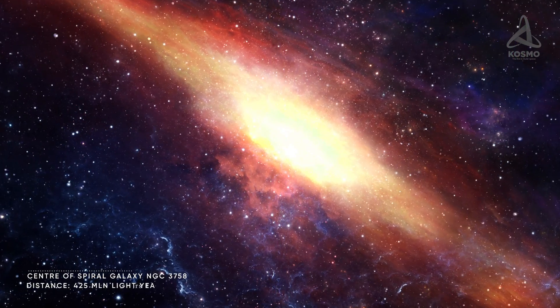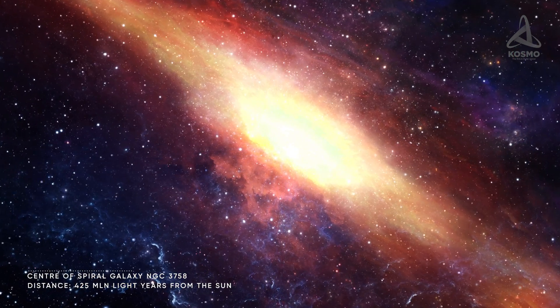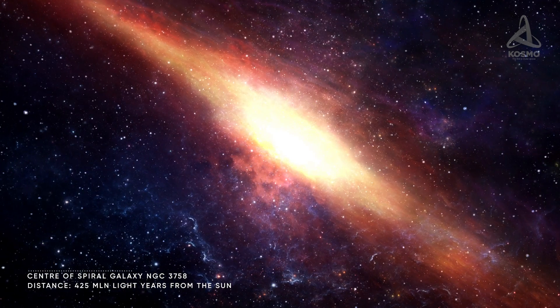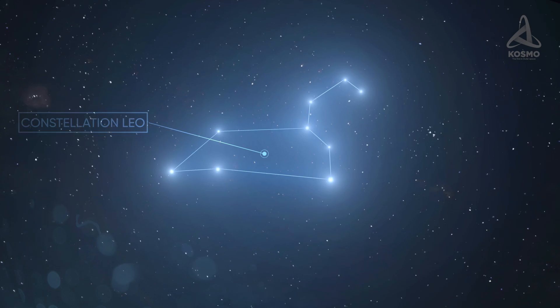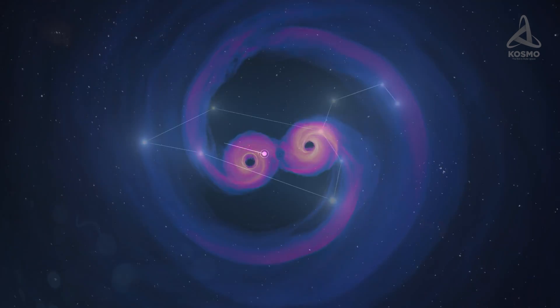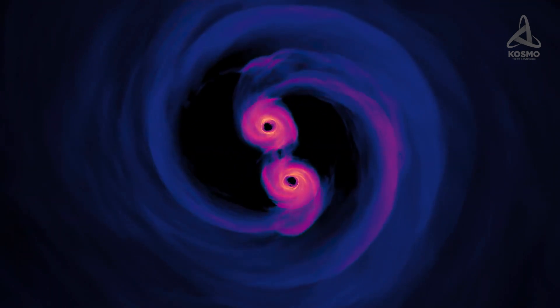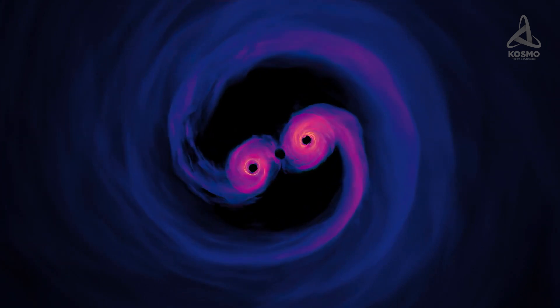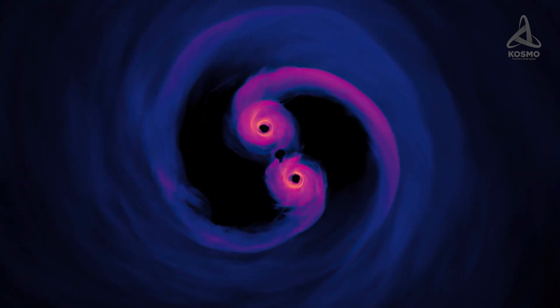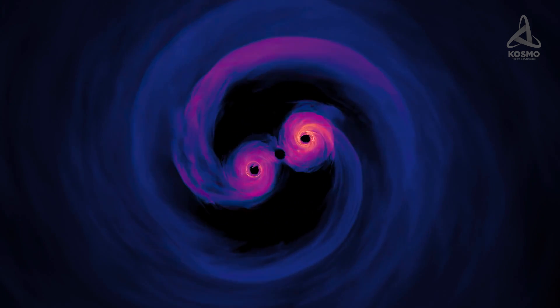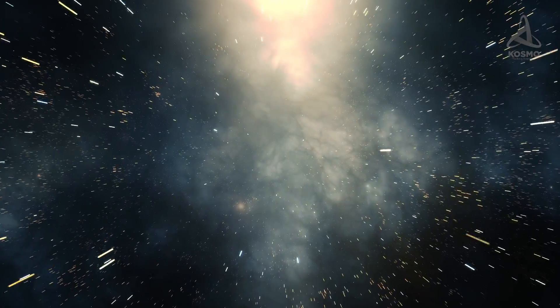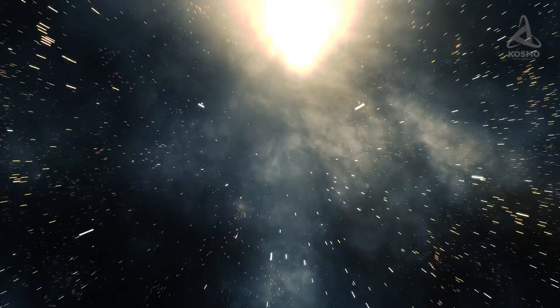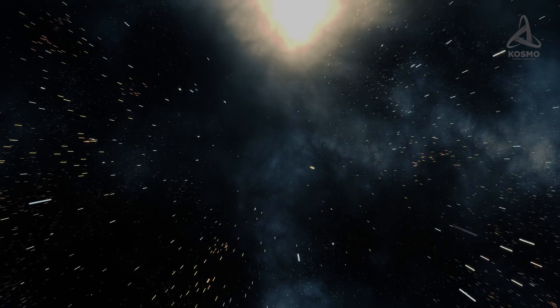One more object of this variety is the center of the spiral galaxy NGC 3758, located in the Leo constellation, it is about 425 million light-years away. The galaxy's center is a system of two supermassive black holes that orbit each other at a distance of 11,000 light-years. As for other similar objects, they lie over 500 million light-years away from the solar system.